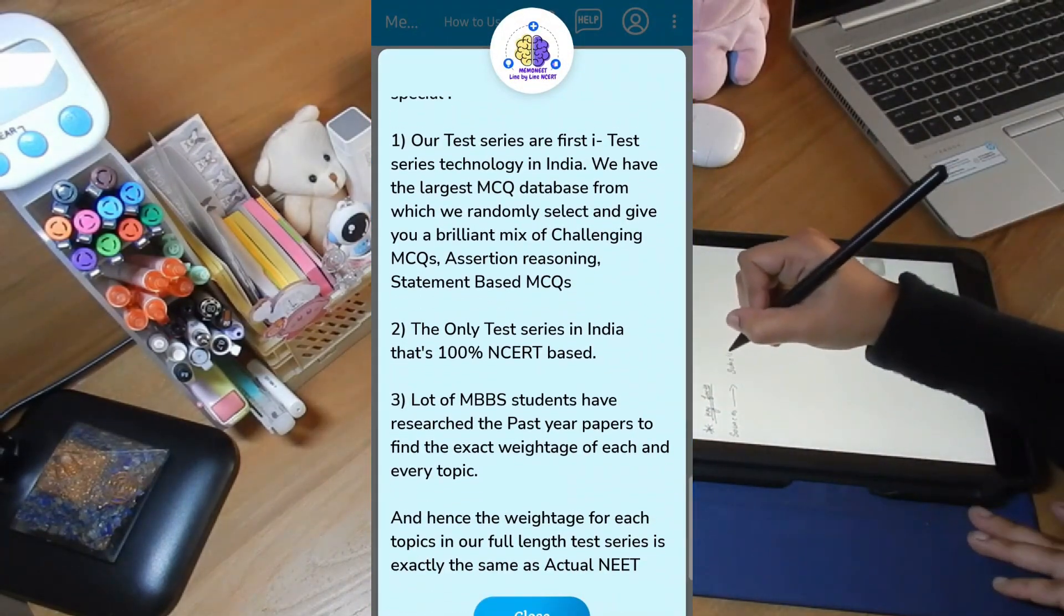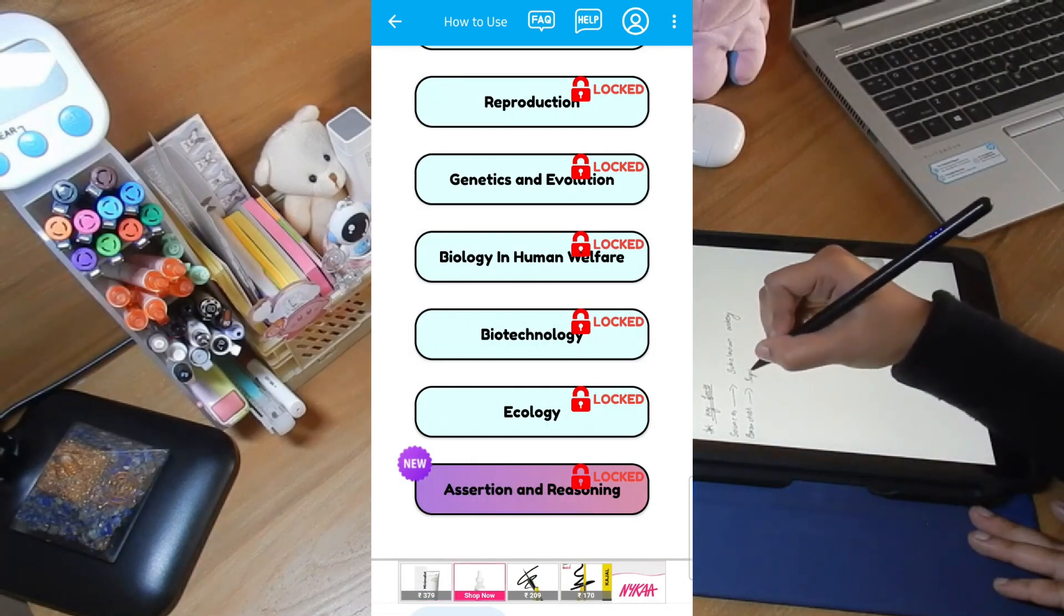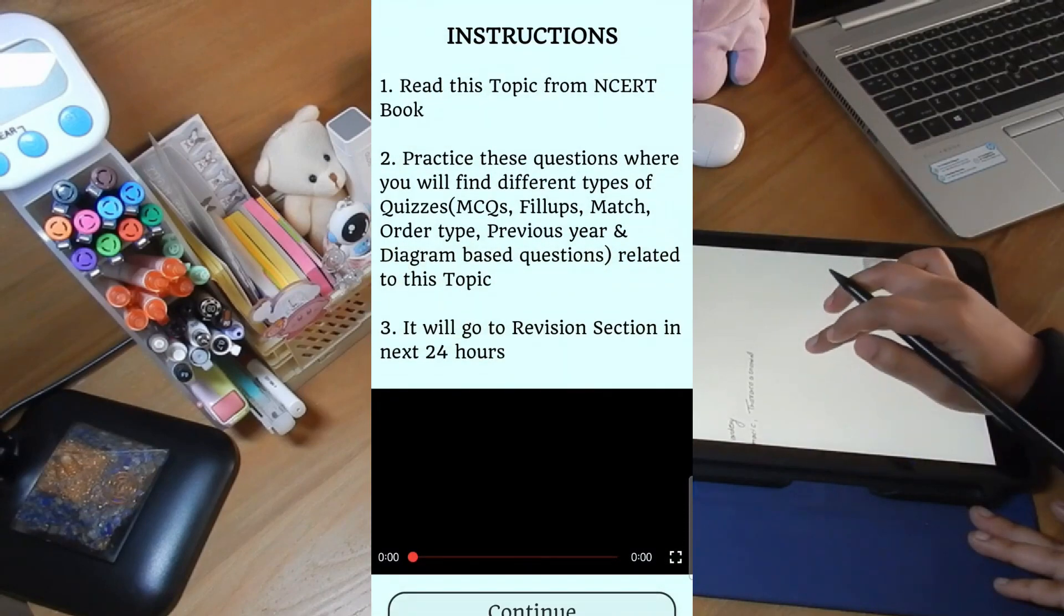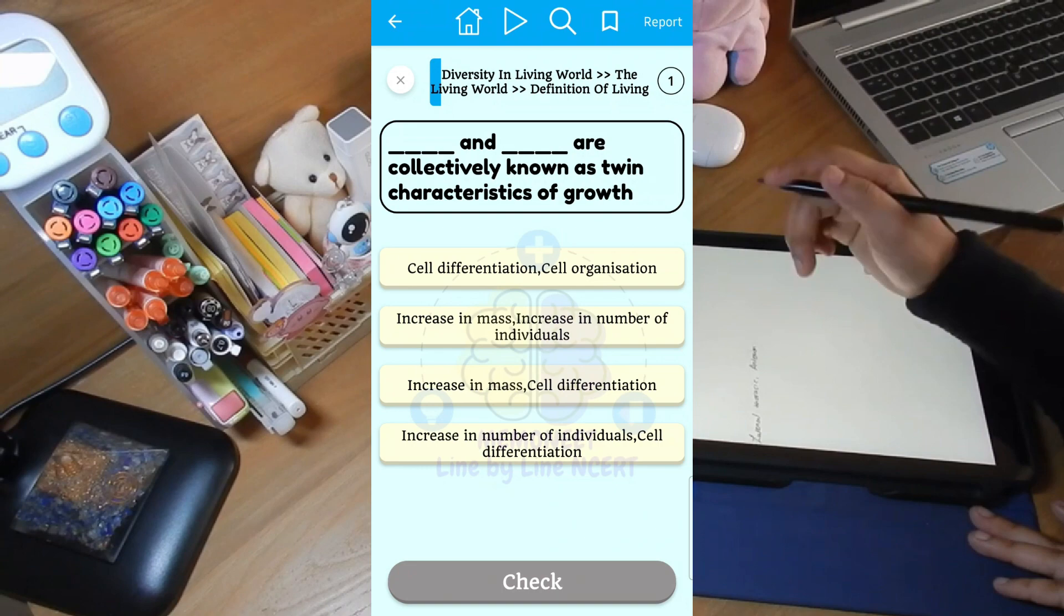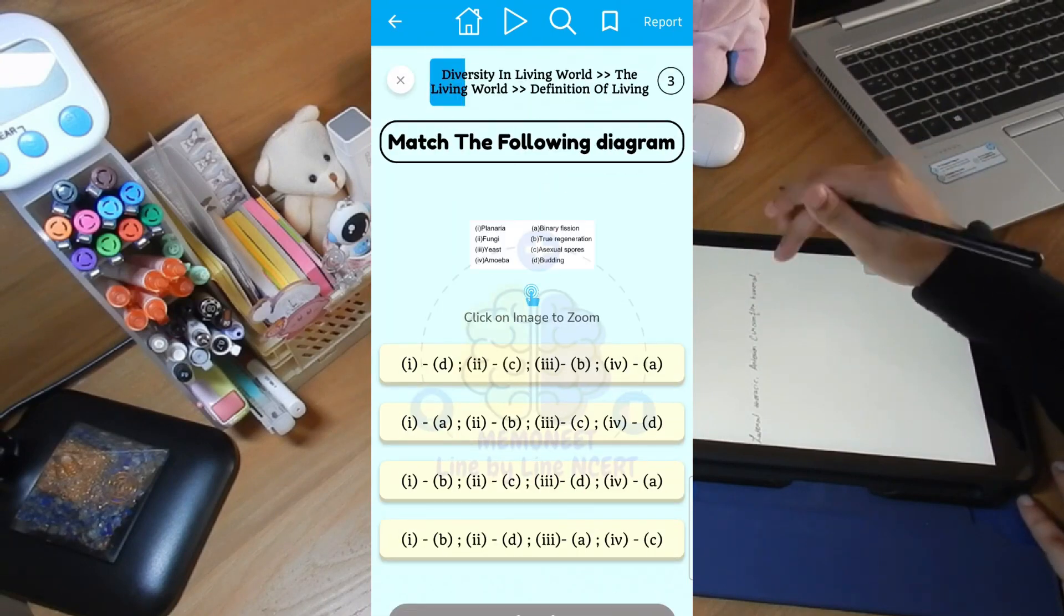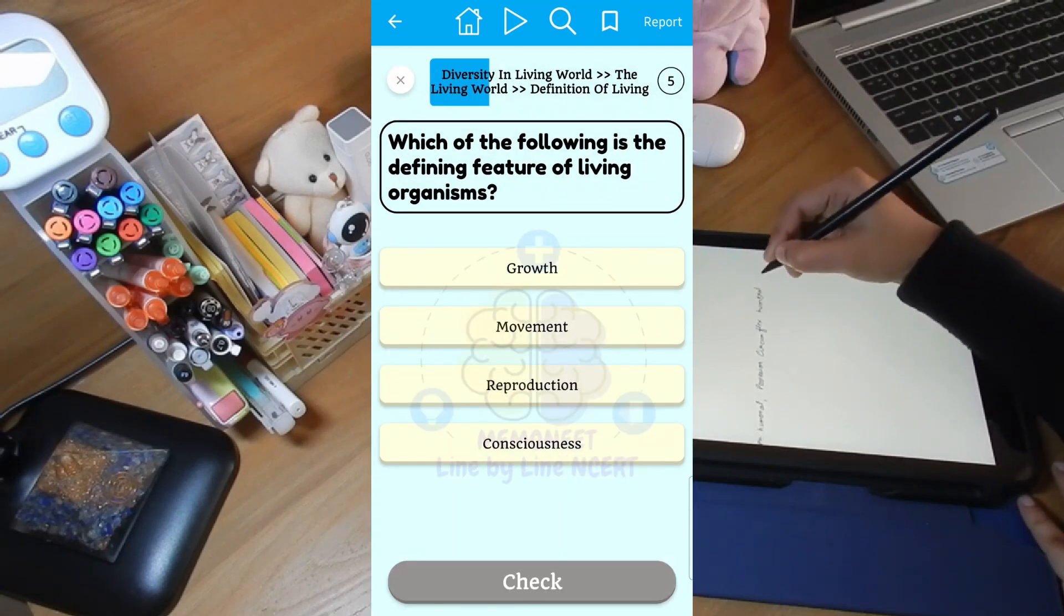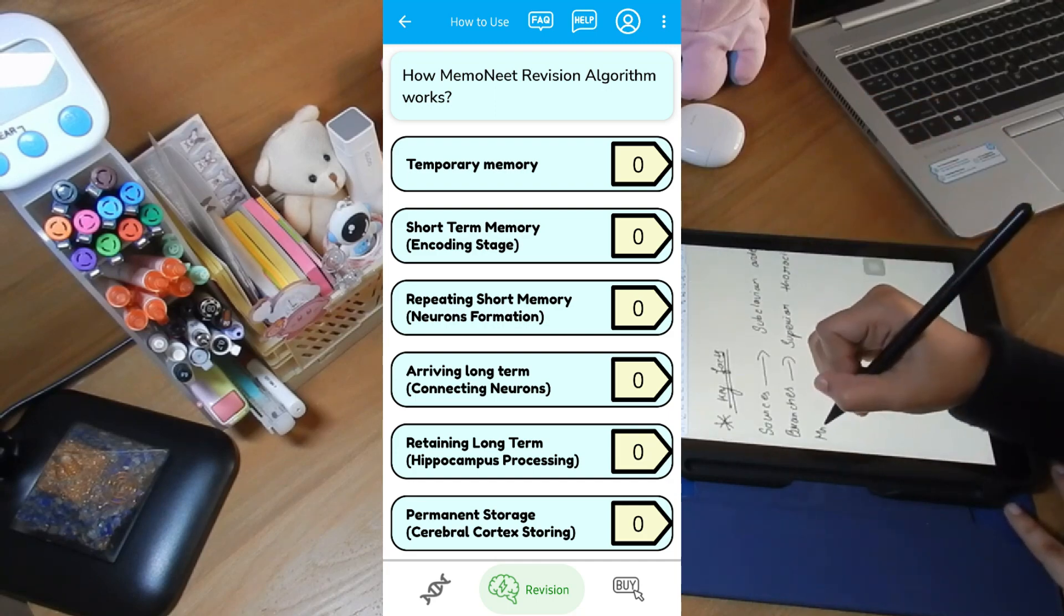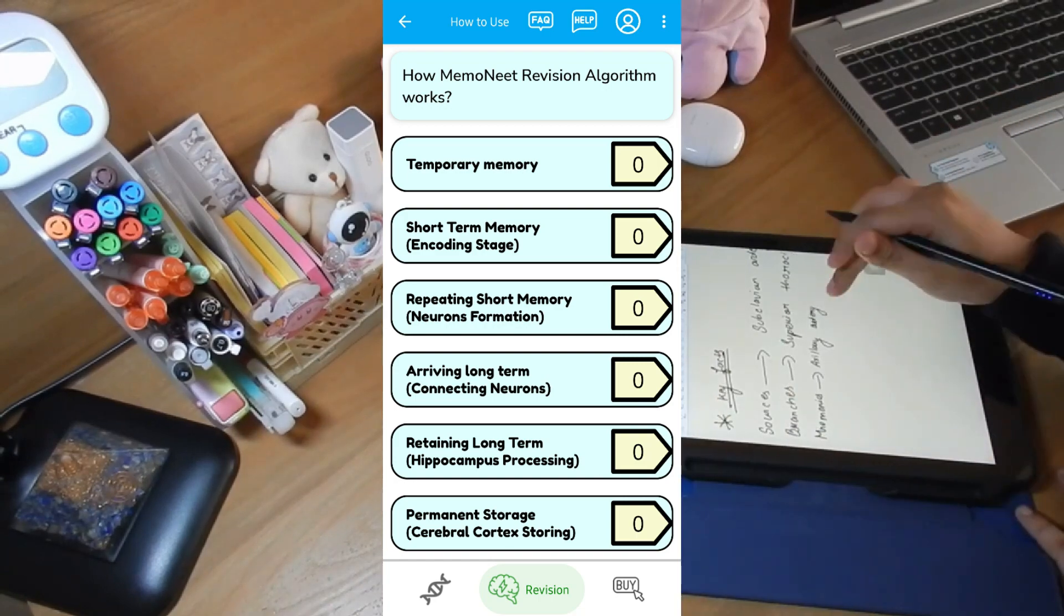The app Memoneet is very helpful for NEET preparation as well as to practice mock tests. In this app you'll get MCQs and assertion reasoning questions. Memoneet is really beneficial and had almost 3000+ assertion reasoning and multiple statement questions in biology, framed in the exact NEET 2022 pattern. Let me tell you why Memoneet is best: it has almost 30,000+ questions that come with a special revision algorithm.